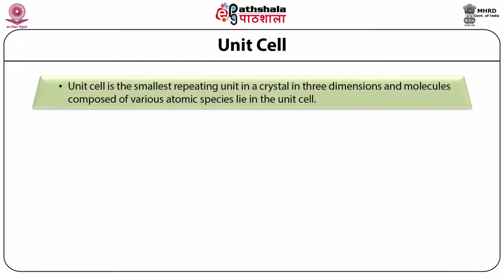The unit cell is the smallest repeating unit in a crystal in three dimensions, and molecules composed of various atomic species lie in the unit cell. A simple example for the unit cell is a matchbox — you can consider a small number of matchsticks in the matchbox as a molecule and the matchbox itself as a unit cell. You can repeat the matchbox by placing others next to it in all three directions, forming a three-dimensional arrangement.